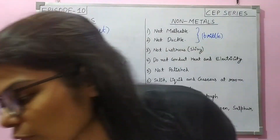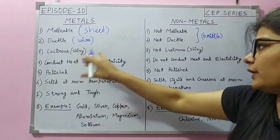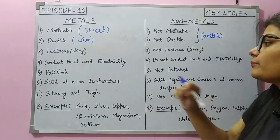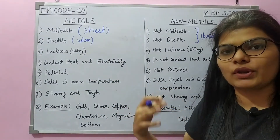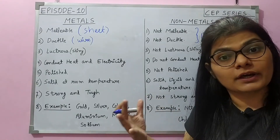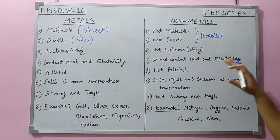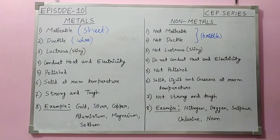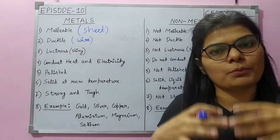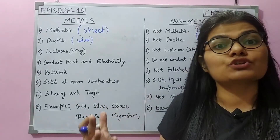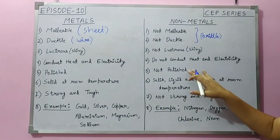Metals are shiny — they have luster. Non-metals are not lustrous; they are not shiny. The metals can conduct heat and electricity. If you have seen copper wires, they conduct electricity. If you have cooked food in aluminum, it gets warm — it conducts heat. Non-metals cannot conduct heat and electricity. We can polish metals, as seen on cars or vehicles, with different colors. Non-metals will not polish the same way.